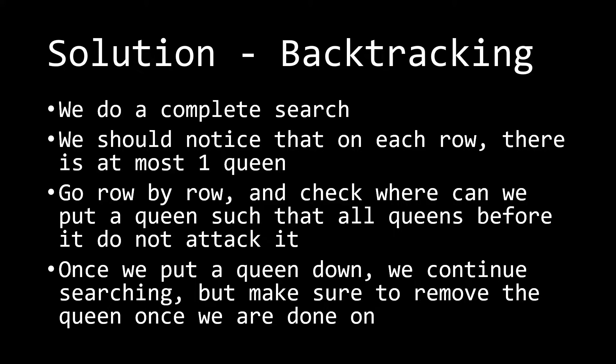What we should notice first is that on each row, there's going to be at most one queen. That makes sense because if we put two queens on the same row, they would automatically be attacking each other. Since we have to put one queen on one row, we should go row by row, and for each row check where we can put a queen such that all queens before it do not attack it.